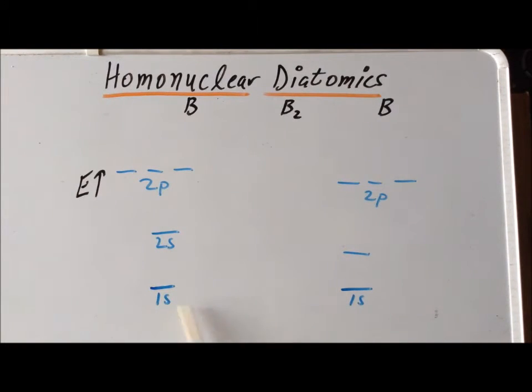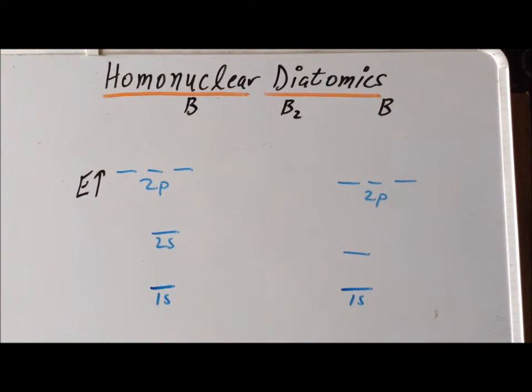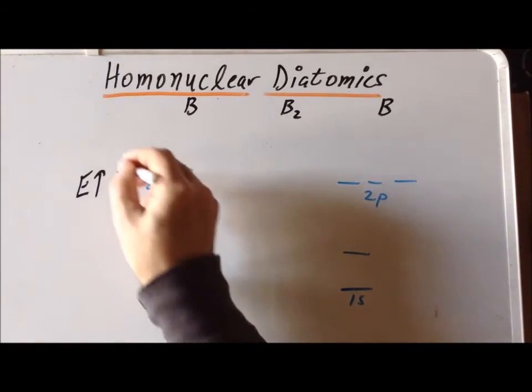We draw the 1s orbitals for each of the two boron atoms at roughly the same horizontal level to indicate that they're at exactly the same energy because they're both boron. We show the five electrons that each boron has.